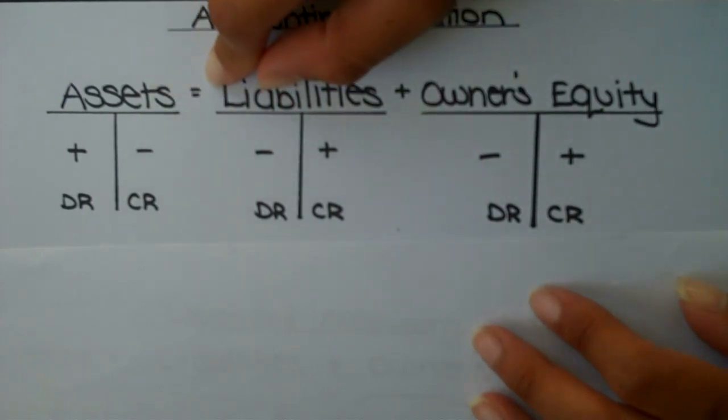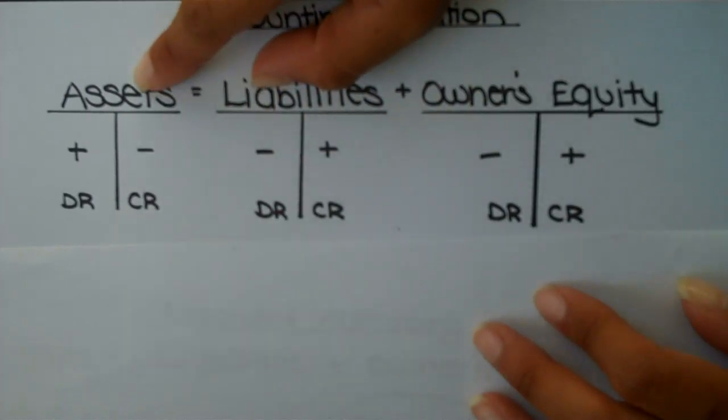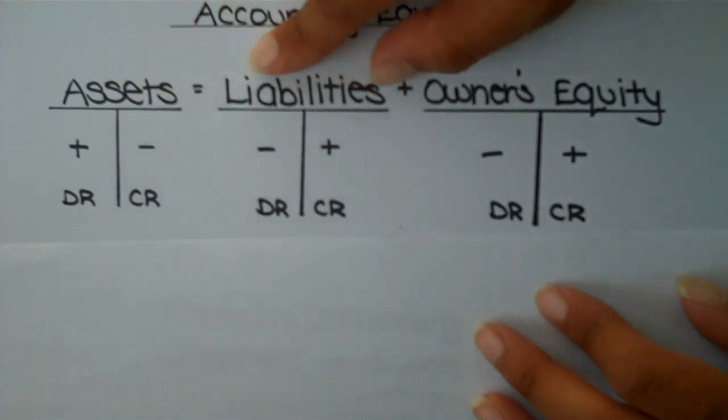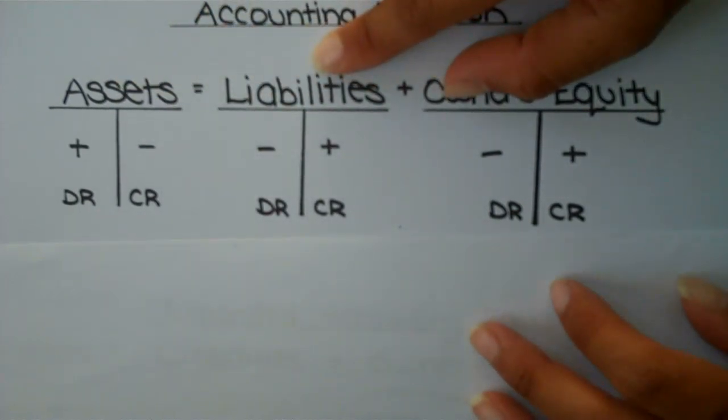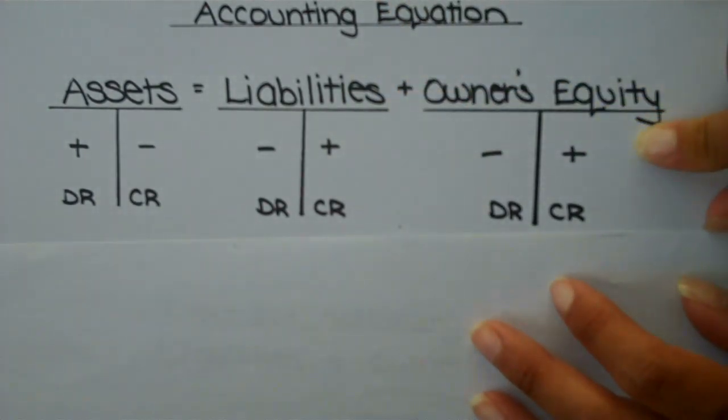Now in order for us to maintain our equation, meaning both sides are always in balance, if assets increase on the left-hand side, then liabilities must increase on the opposite side or the credit side. And the same must be true for owner's equity.